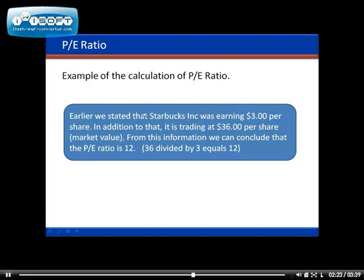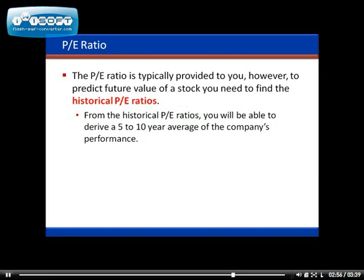As an example, we stated earlier that Starbucks was earning three dollars per share and was trading at thirty-six dollars per share as its market price. From this information, we can derive the PE ratio: dividing the market price of thirty-six dollars by three dollars per share gives you a PE ratio of twelve. The PE ratio is typically provided for you.